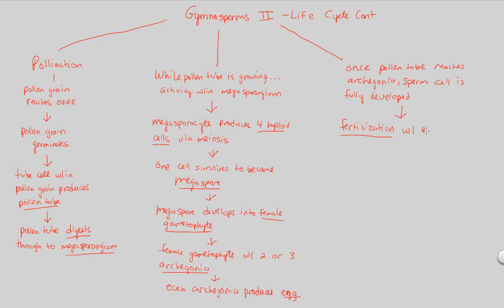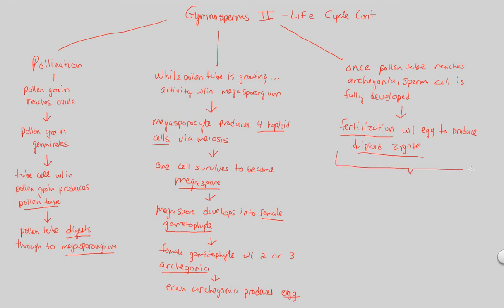Of course, that important life-harboring process of fertilization occurs. The sperm will fertilize with the egg to give us and produce a diploid zygote — just as you would expect. You're combining a haploid structure with another haploid structure, because meiosis was used to produce both the tube cell and the sperm cell. Fertilization with the egg to produce a diploid zygote is our final step.